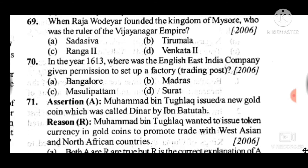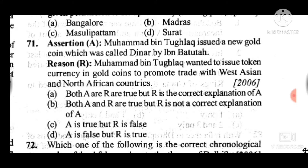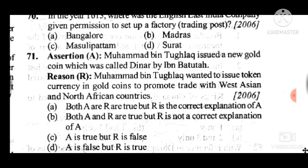Question 71: Consider the following assertion and reason. Muhammad bin Tughlaq issued a new gold coin called Tinar by Ibn Battuta. Reason: Muhammad bin Tughlaq wanted to issue token currency in gold coins to promote trade with West Asia and North African countries. Answer to question 71 is C: A is true but R is false — the reason is false.